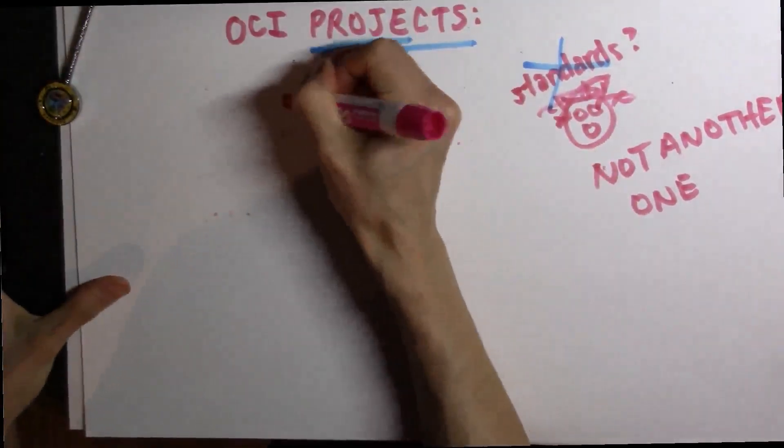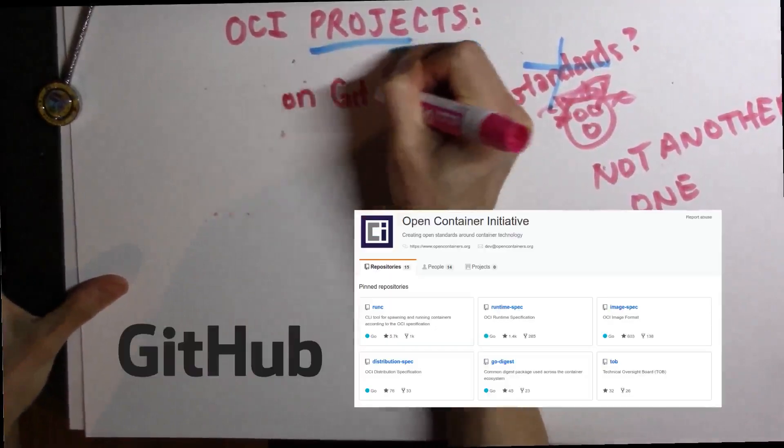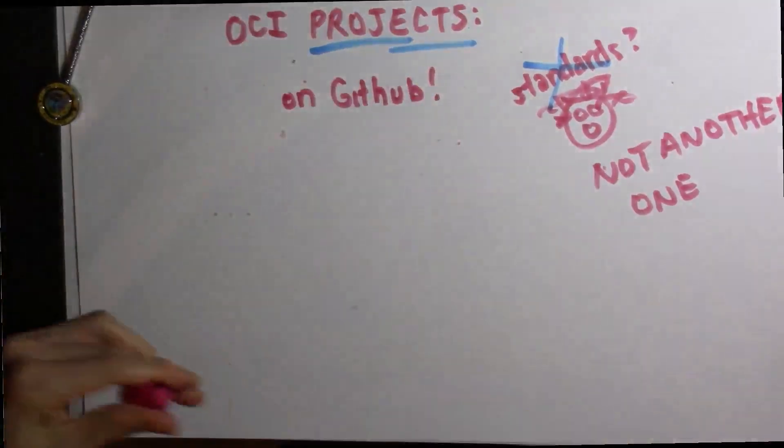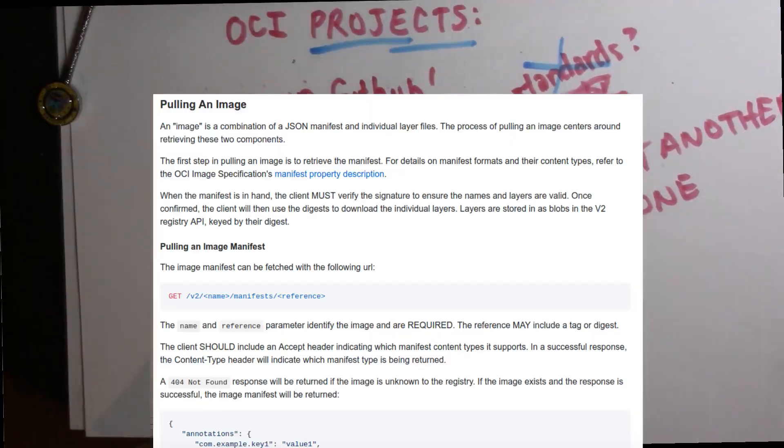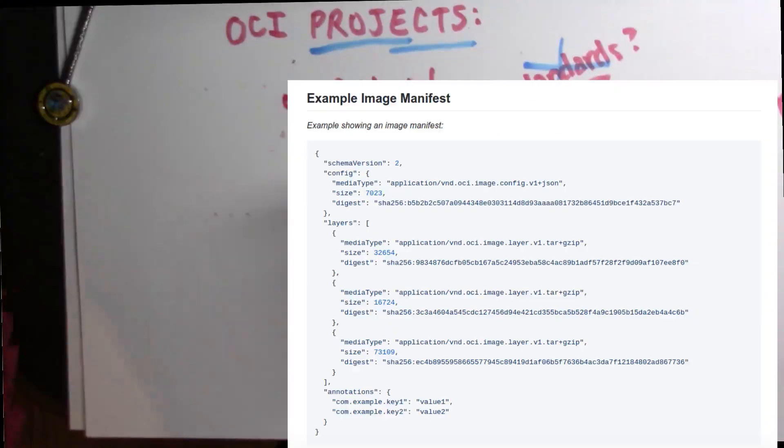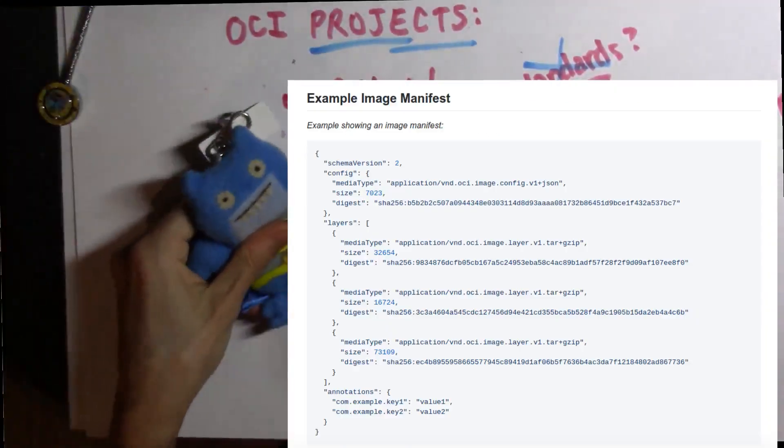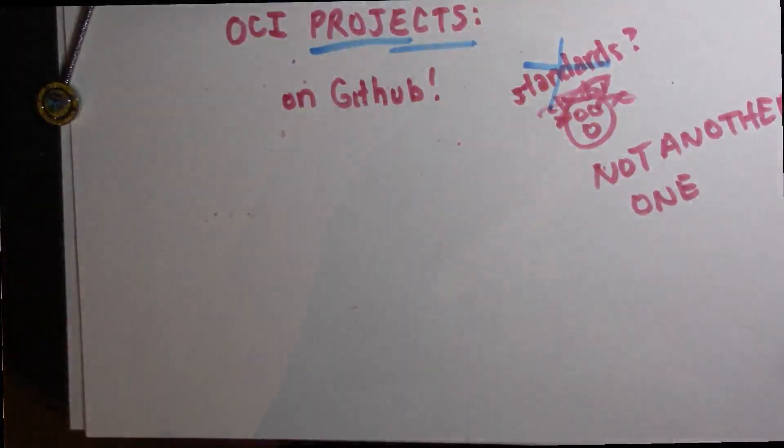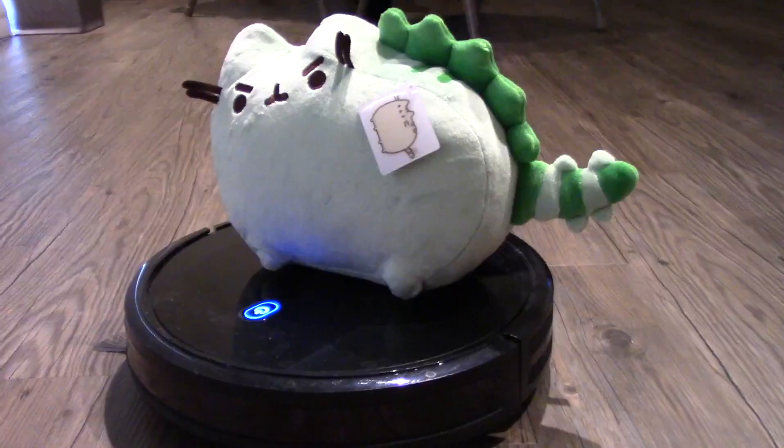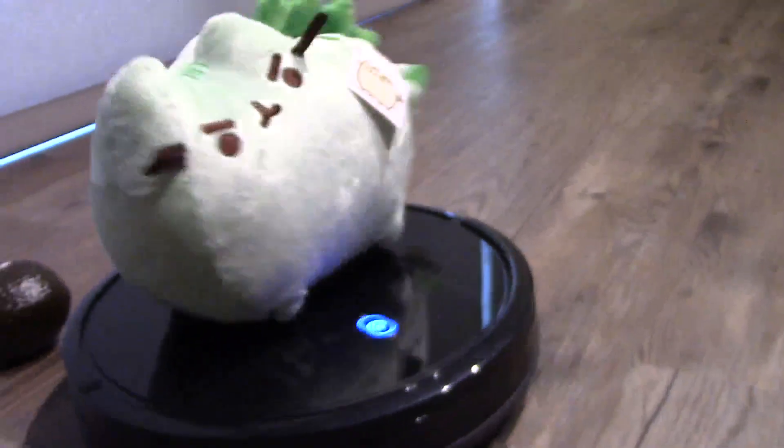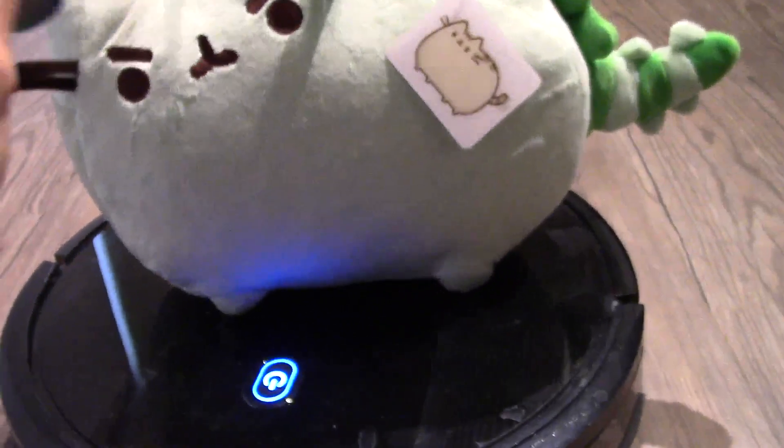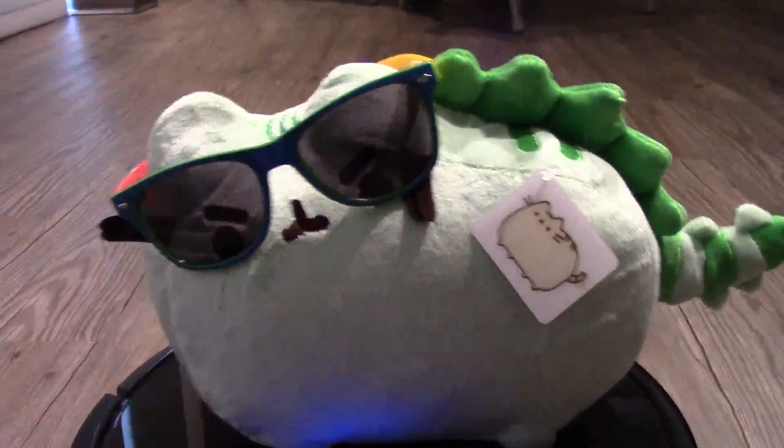Because when push comes to shove, what each of these things comes down to is a GitHub repository that has a bunch of markdown in it that has simple rules like when you pull a container, this is the kind of interaction that you should have. This is the contents of an image manifest. It really comes down to things that simple. There's nothing abstract and crazy about this. So what I want to do is I want to walk through these projects with you. And I want to give you a sense of the project, but I also want to talk about why it might be relevant to you.